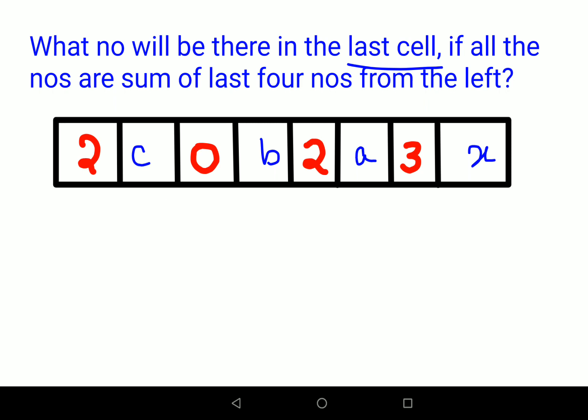Now here see, they are saying that every cell is the sum of last 4 numbers from your left. So this is your left. So x will be what? 3 plus a plus 2 plus b.